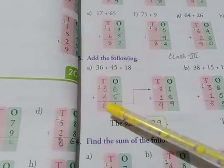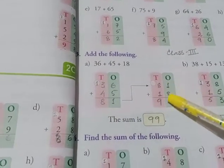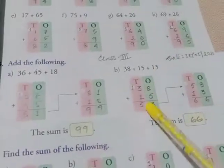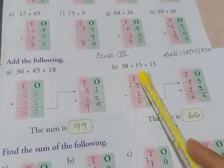81 plus 18: 1 plus 8 equals 9, 8 plus 1 equals 9. The sum is 99. Next, number b: 38 plus 15 plus 13.